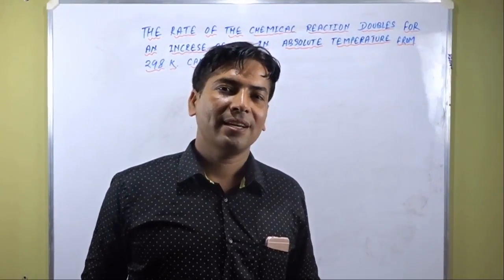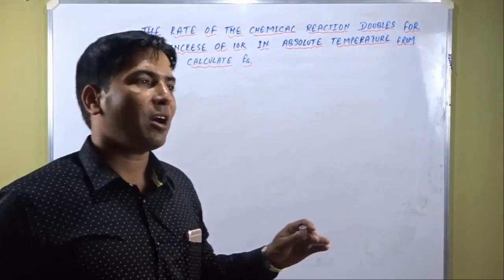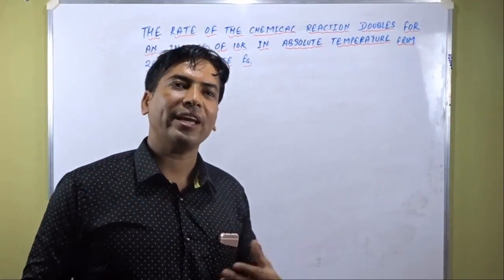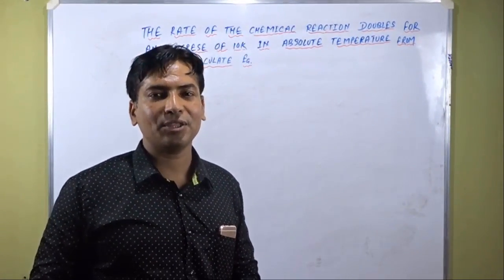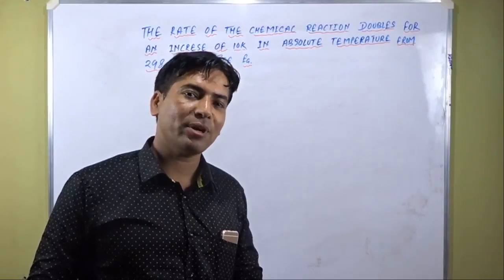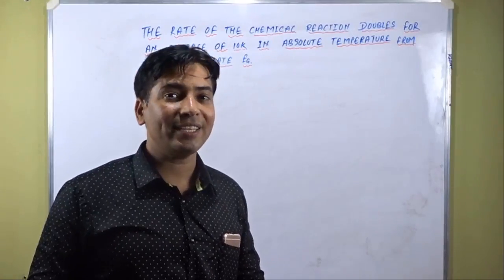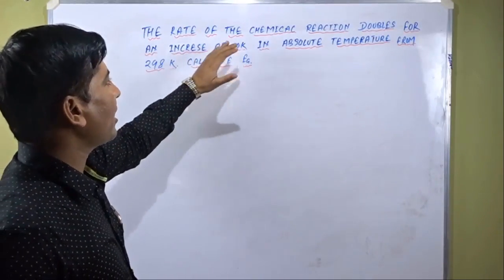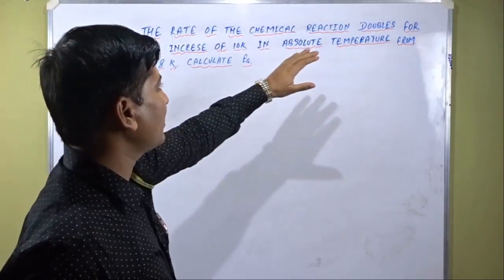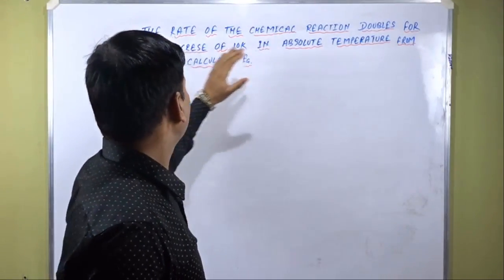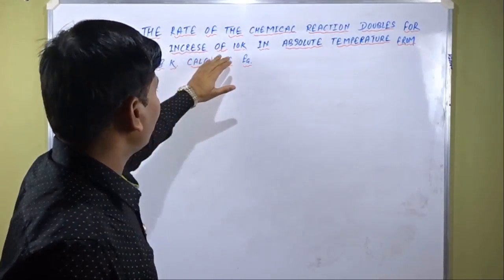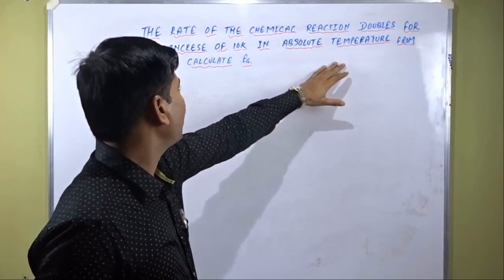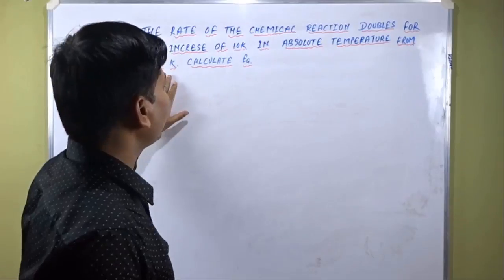Dear students, in this problem we will learn how we can calculate activation energy by using the Arrhenius equation. The problem says that the rate of a chemical reaction doubles for an increase of 10K in absolute temperature from 298K.